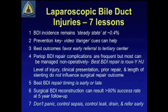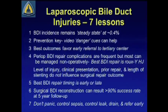The lessons learned in seven minutes: Number one, bile duct injury incidence remains at a steady state of about 0.4%. Number two, prevention is key — remember the video key cues to danger; they can help you stay out of trouble before you get into it. Number three, best outcomes favor early referral to a tertiary center. Perioperative bile duct injury repair complications are frequent but most often can be managed non-operatively. The best repair favors a Roux-en-Y hepaticojejunostomy. The level of injury, clinical presentation, prior repair, and length of stenting do not influence surgical repair outcomes. The best timing is either early or late. Surgical bile duct injury reconstructions can result in greater than 90% success rates durable at five years. At the time it occurs: don't panic, control sepsis, control leak, drain, and refer early. Thank you.